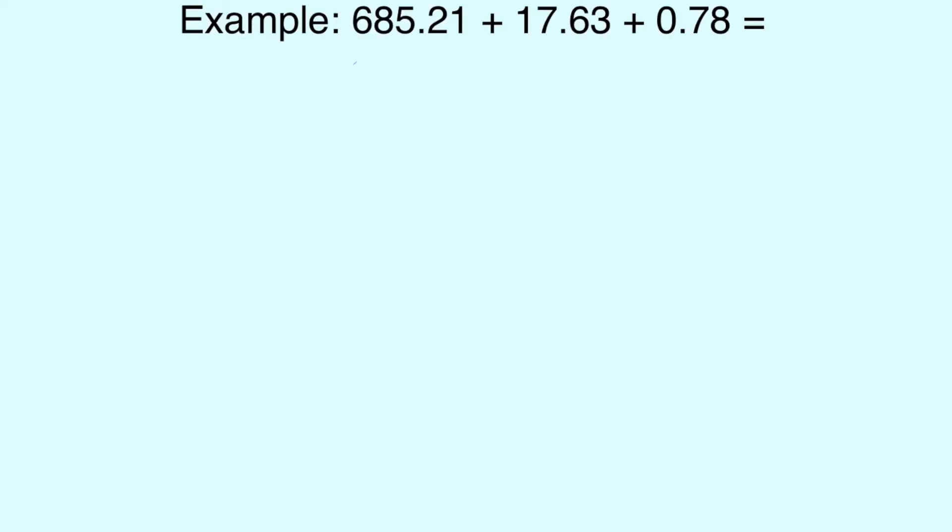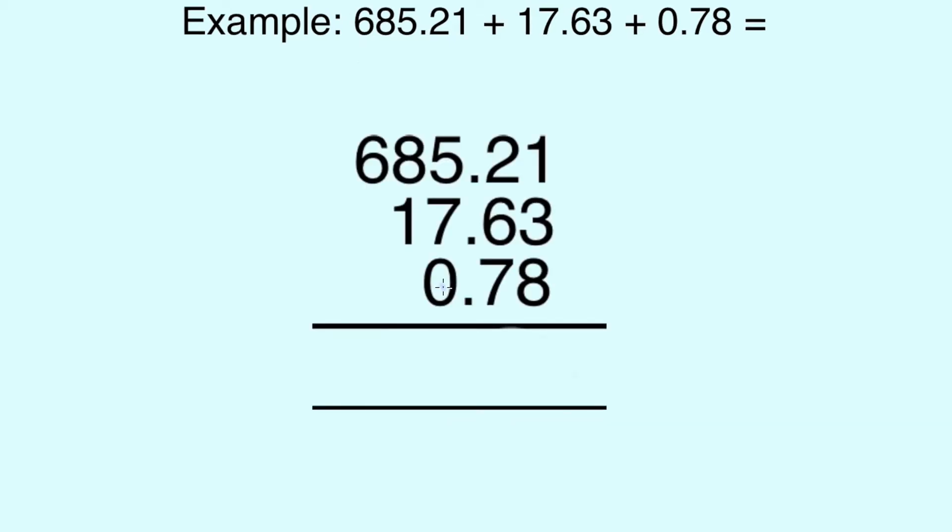I'm starting off with the problem 685.21 plus 17.63 plus 0.78. Sometimes this will have a zero in front of it, other times it won't, but in this case it's a zero in front. So always put a zero before the point.